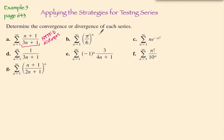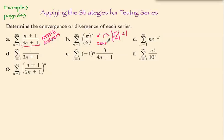This one we can identify as a geometric series where the ratio is pi over 6. Remember, if the ratio is less than 1 it converges, and greater than or equal to 1 it diverges. This does have an absolute value associated with it, but regardless, pi over 6 is less than 1, so this series converges by the geometric series test.